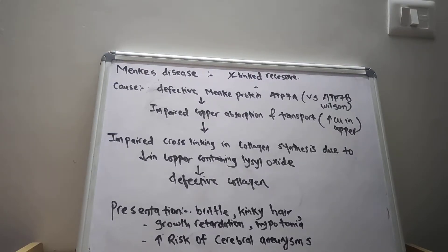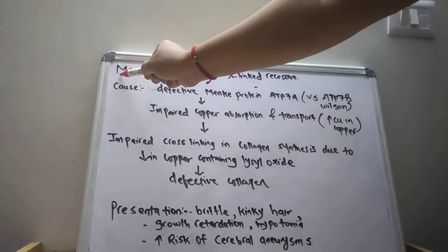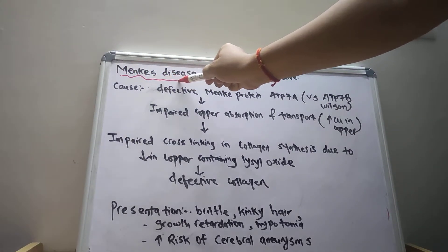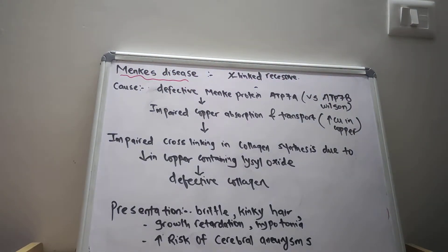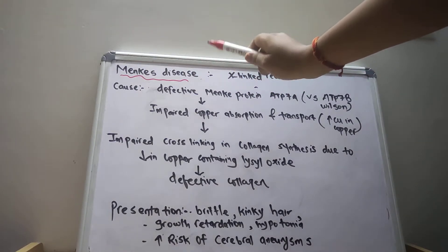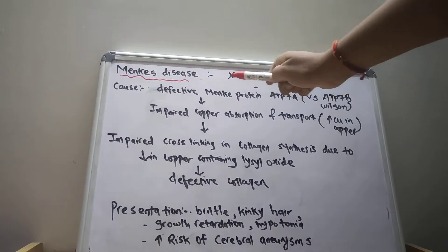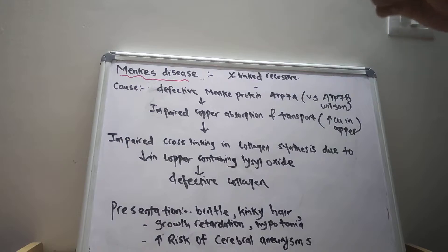Hello everyone, let us discuss another topic in cellular biochemistry — Menkes disease. The Menkes disease occurs due to a defect in collagen synthesis. It mainly occurs due to a defect in the cross-linking, which is the last step in collagen synthesis.